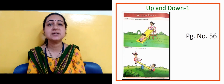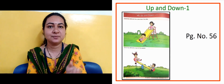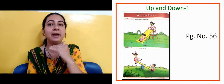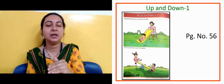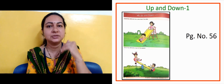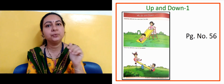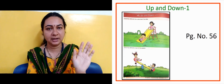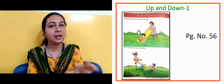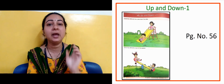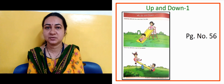The next slide is showing us 'up and down.' Here we saw some children are playing on a slide and on a seesaw. Where it said 'up,' we circled the up position, and where it said 'down,' we circled the down position. That is on page number 56.